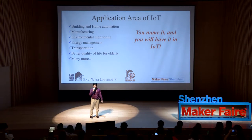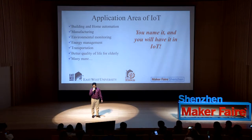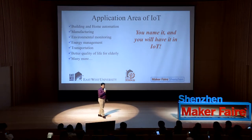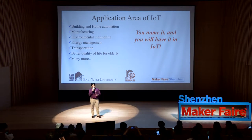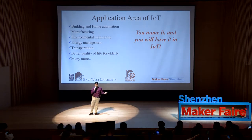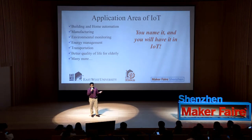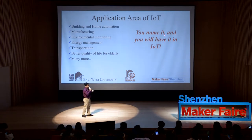Some application areas of IoT: in building automation, almost everyone is able to control their home appliances through a mobile application. In manufacturing, people monitor their machinery and product lines. In environment monitoring, portable weather stations let you check the weather through your mobile device. Of course, it's good for energy management and transportation. It's also better for elderly persons. In IoT, if you name a problem, you can solve it with IoT.